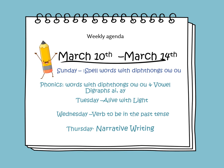In this weekly video, we will learn to spell words with diphthongs OW and OU. In phonics, we'll also be learning about the digraphs AI and AY. On Tuesday, we will continue learning about the story Alive with Light. On Wednesday, we'll be learning about verb to be in the past tense. And on Thursday, we will learn about narrative writing traits and how to construct and write a narrative paragraph.